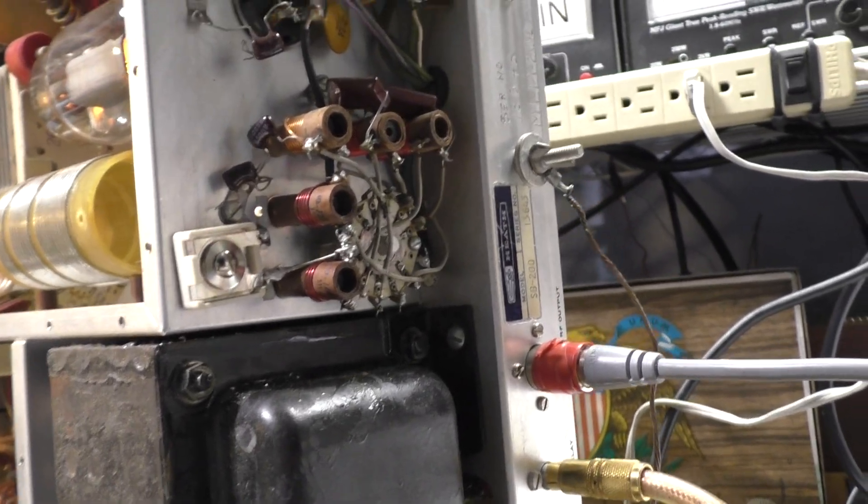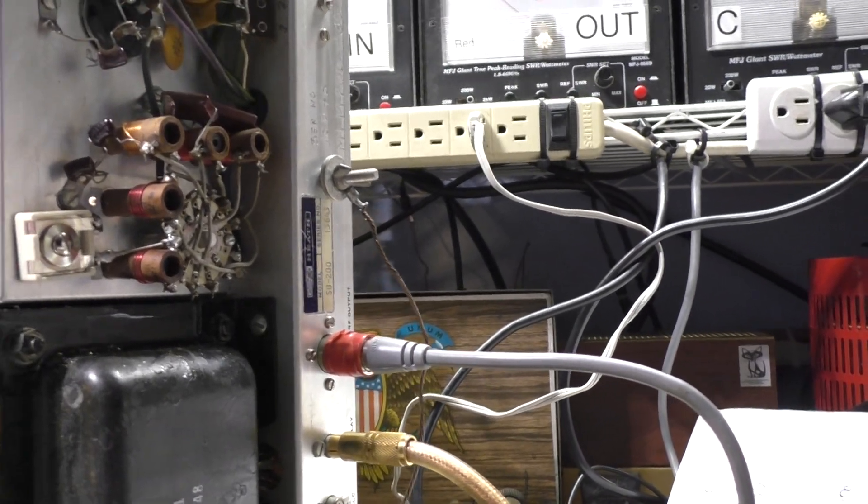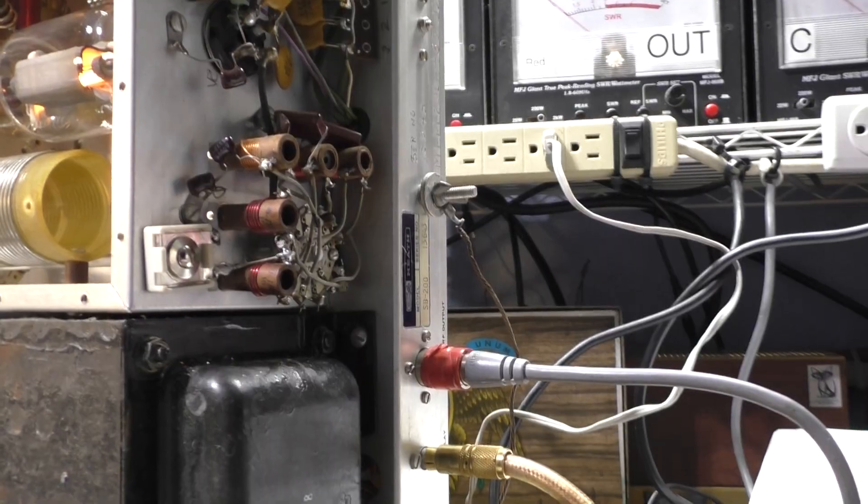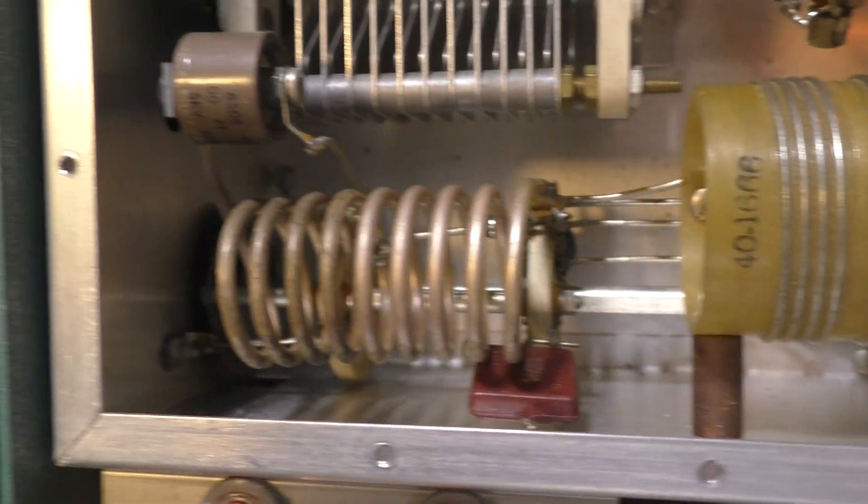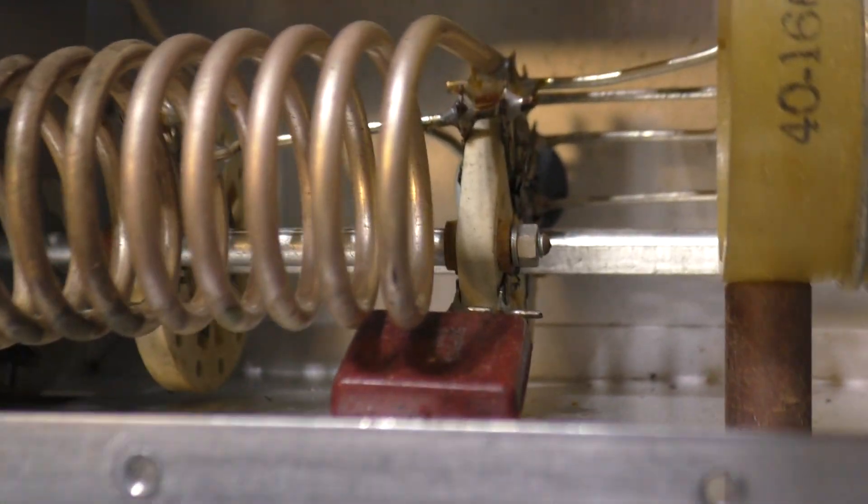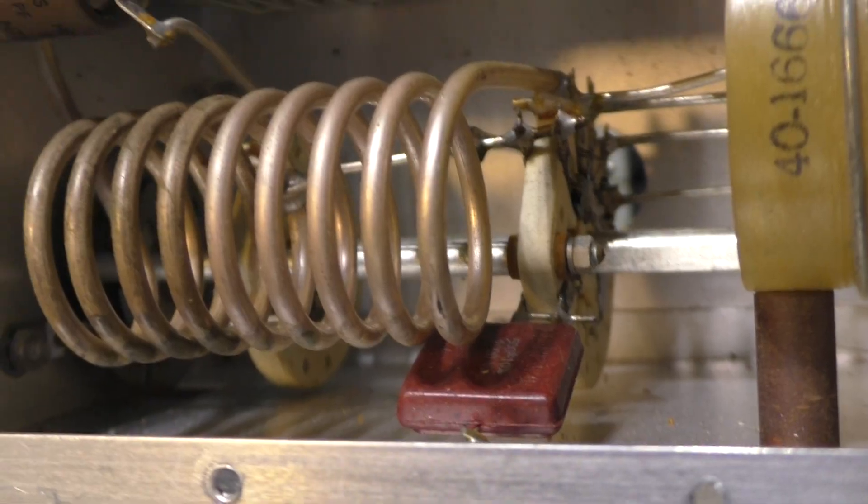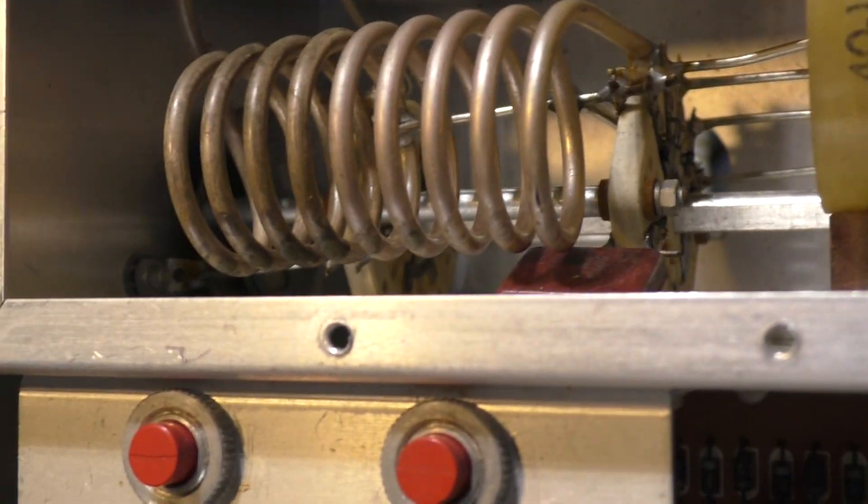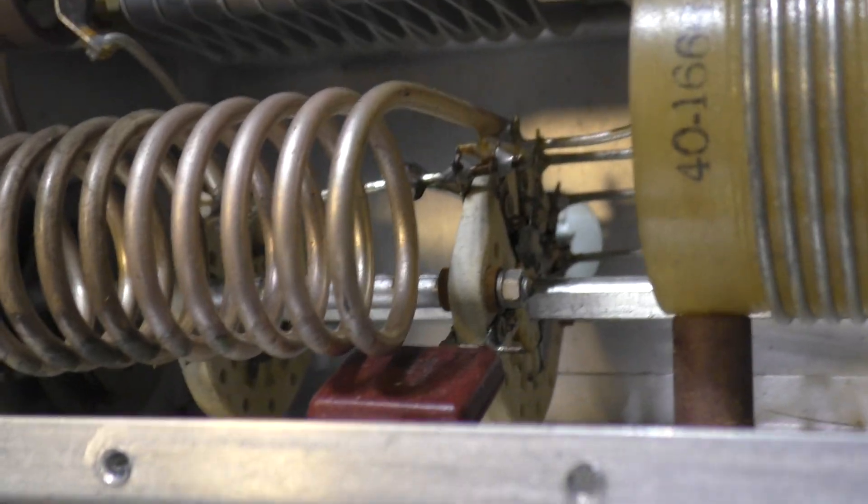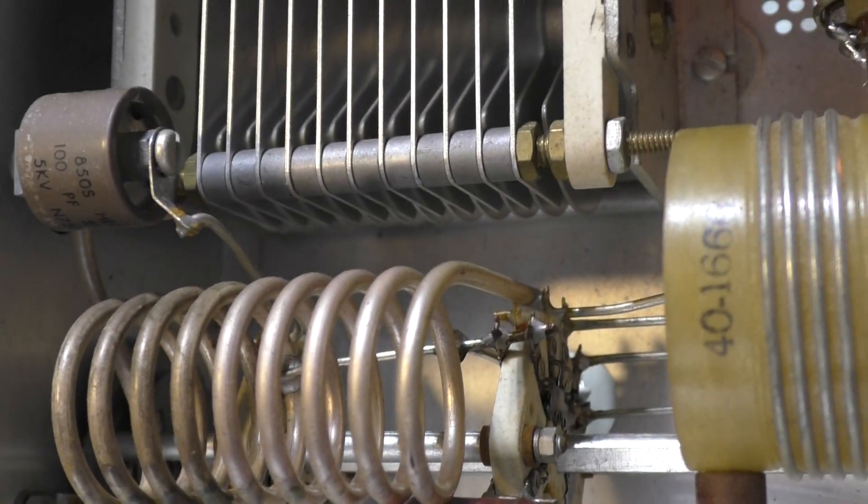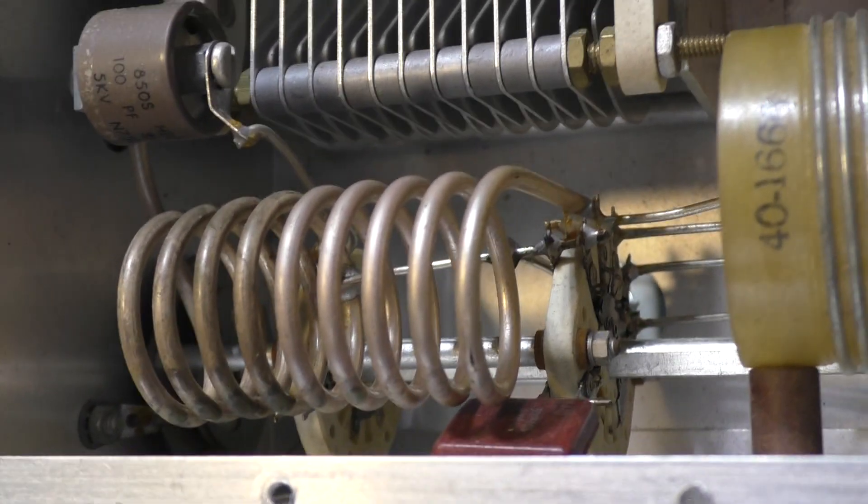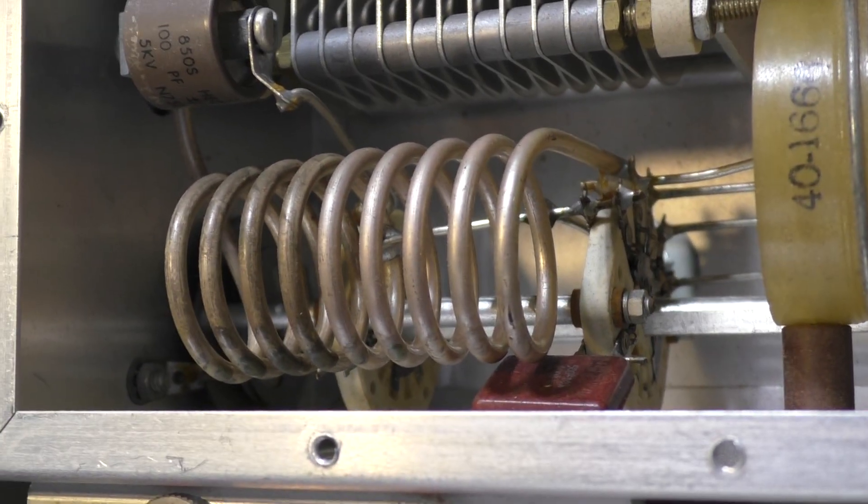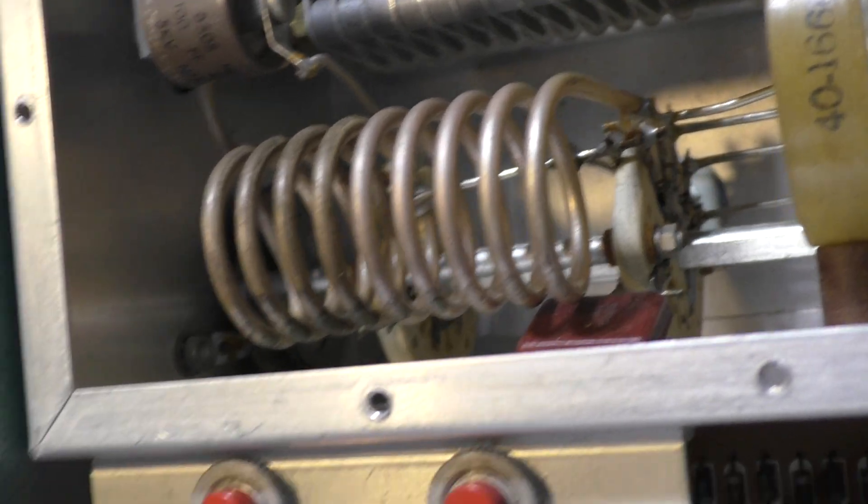And I did mono band this one, but I did it a little different. I left all the ham band components in it, didn't take anything out, but just ran a strap across the band switch, both on the input side which is here, you can see that line that runs across over here. And it's got two wafers, one switches in the extra capacitance for the lower bands and then the coil is switched in too. So just ran a strap across the band switch.